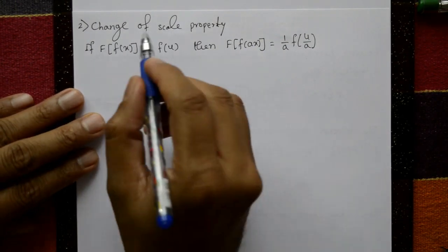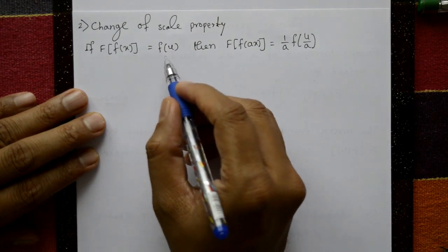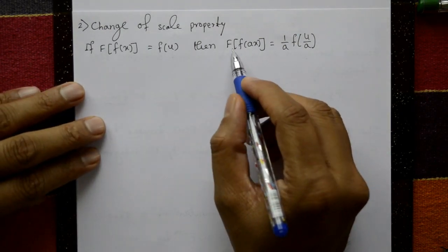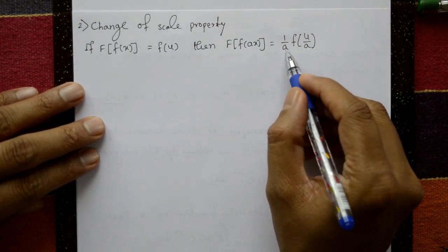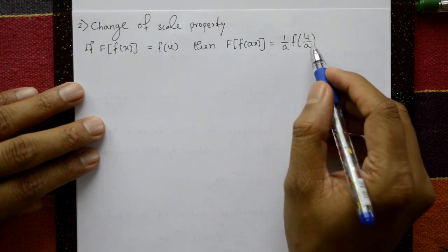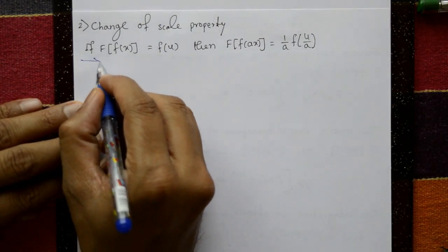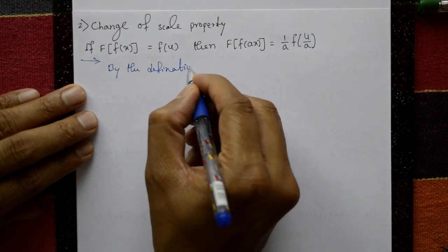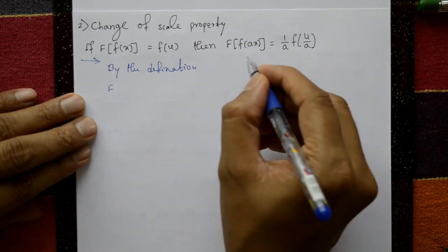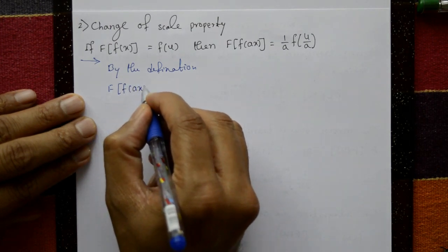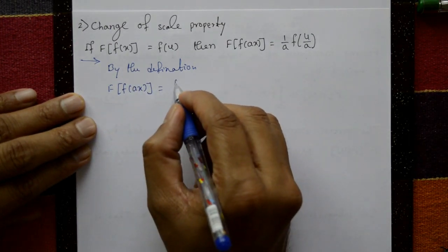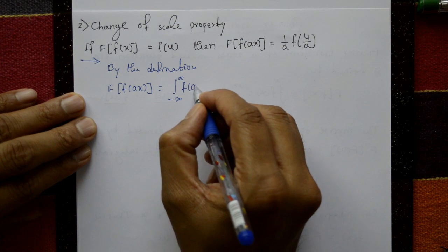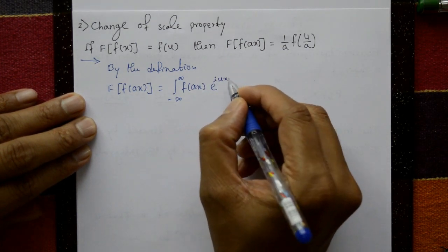Change of scale property: second property. If F of f of x equals F of u, then F of f of a x equals 1 upon a times F of u by a. By definition, F of f of a x equals integration from minus infinity to plus infinity of f of a x times e to the power i u x with respect to x.